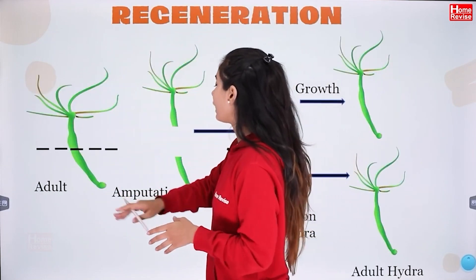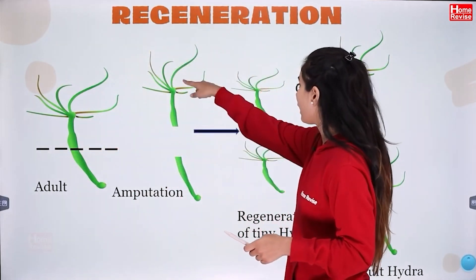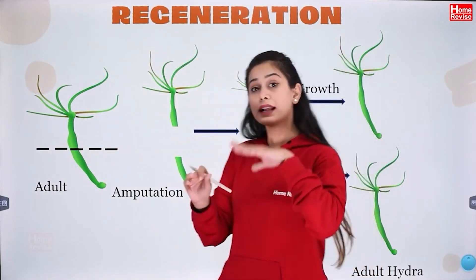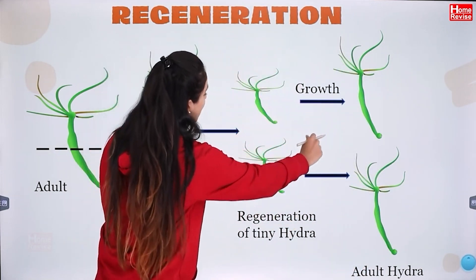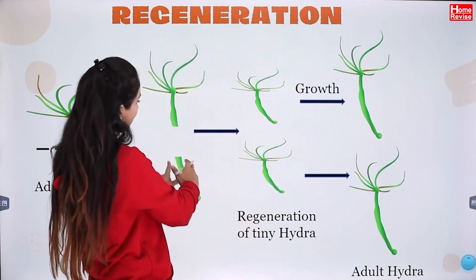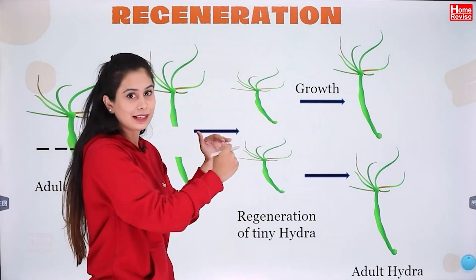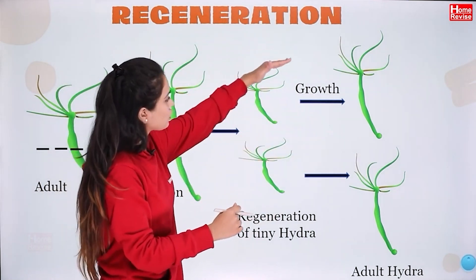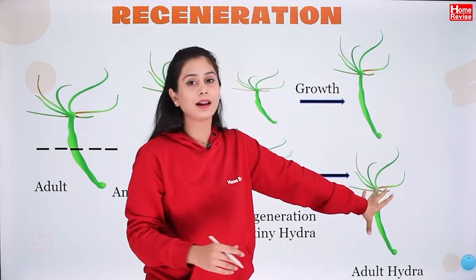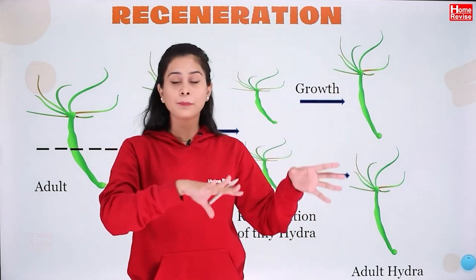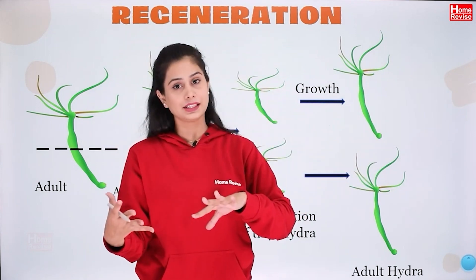To talk about regeneration: you can see there is an adult. If it is cut from behind, there are two parts. The upper part that is cut will become the lower part, and if the lower part is cut, it will become the upper part — the other part will grow. After growing, the two adults become hydra. So in hydra, you can see both examples: budding and regeneration.